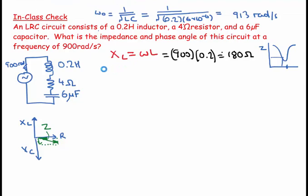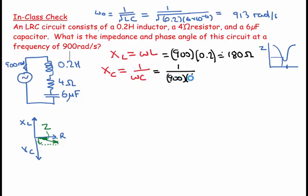The capacitive reactance equals 1 over omega times C. That equals 1 over 900 times 6 times 10 to the minus 6. Taking the inverse gives 185 ohms.